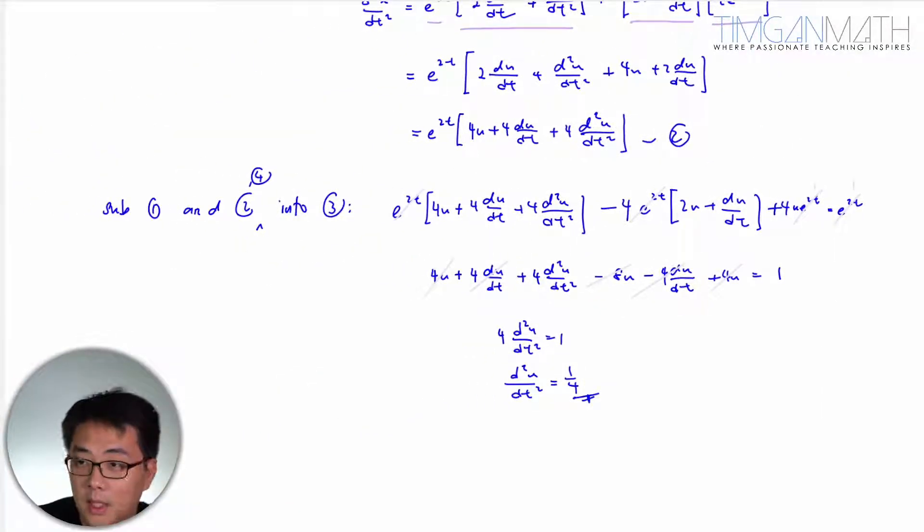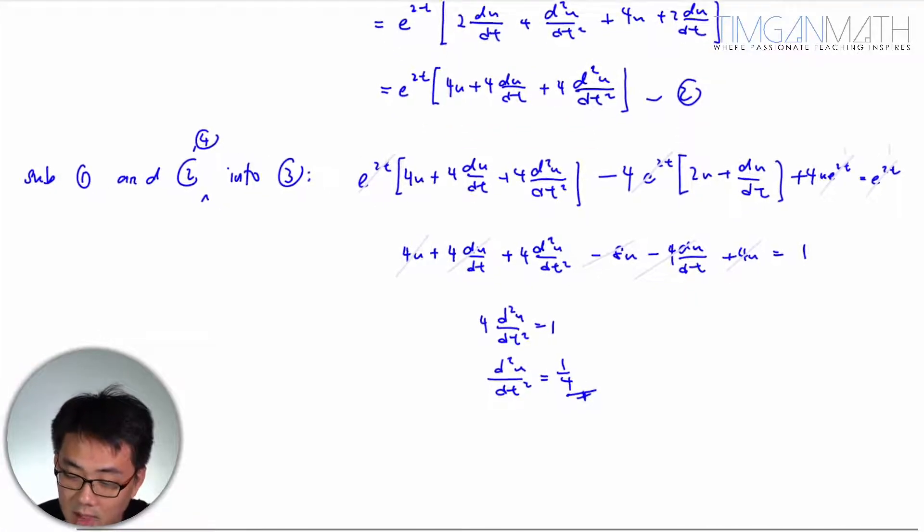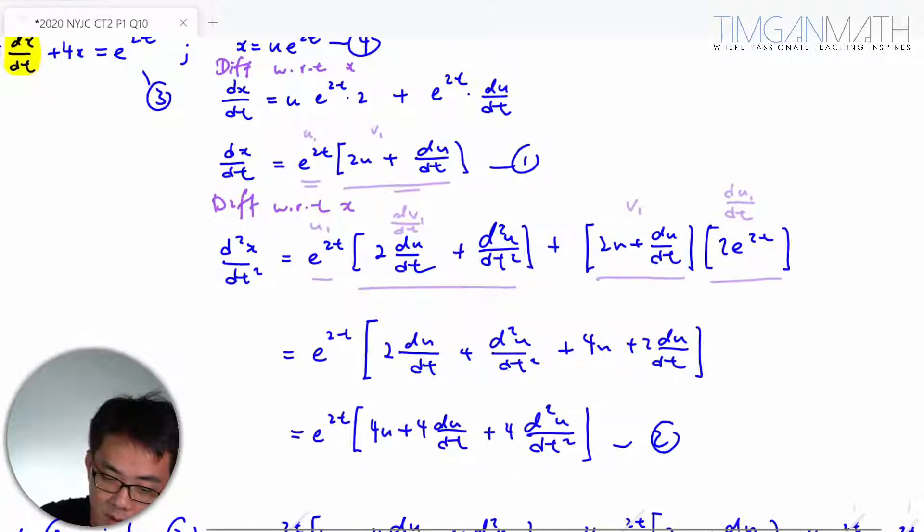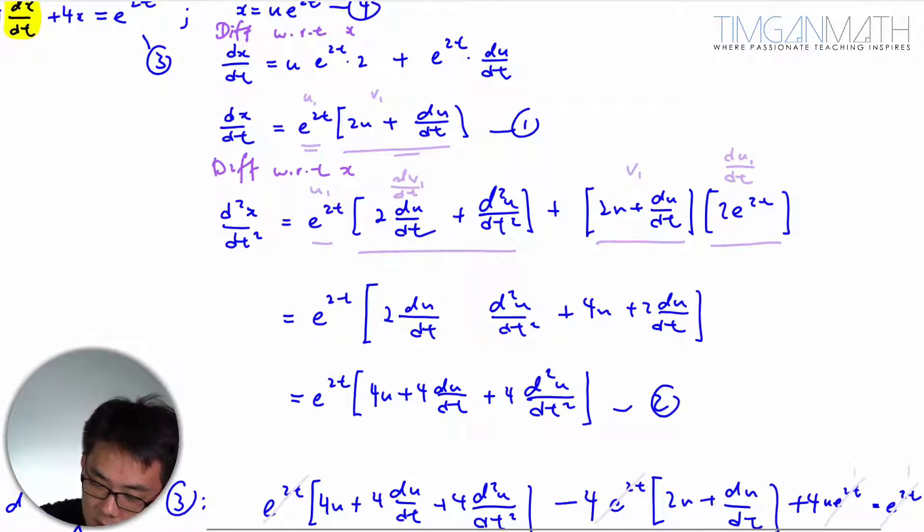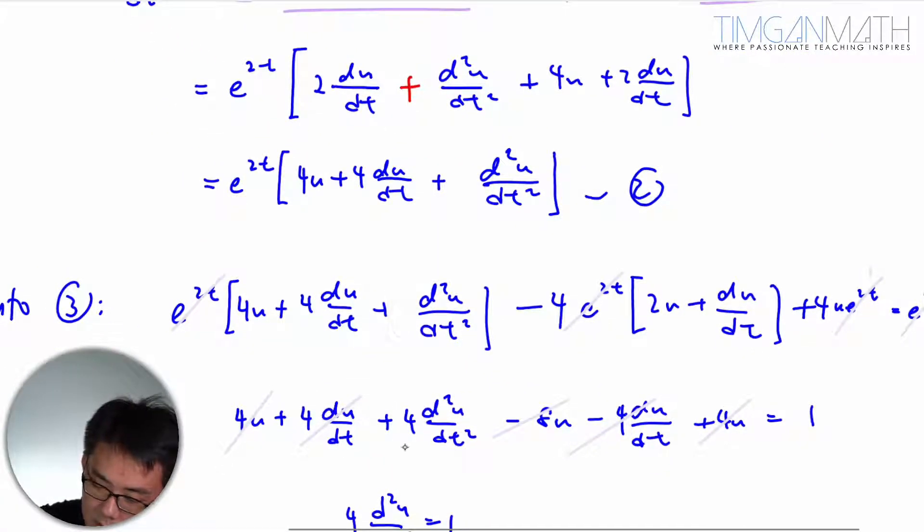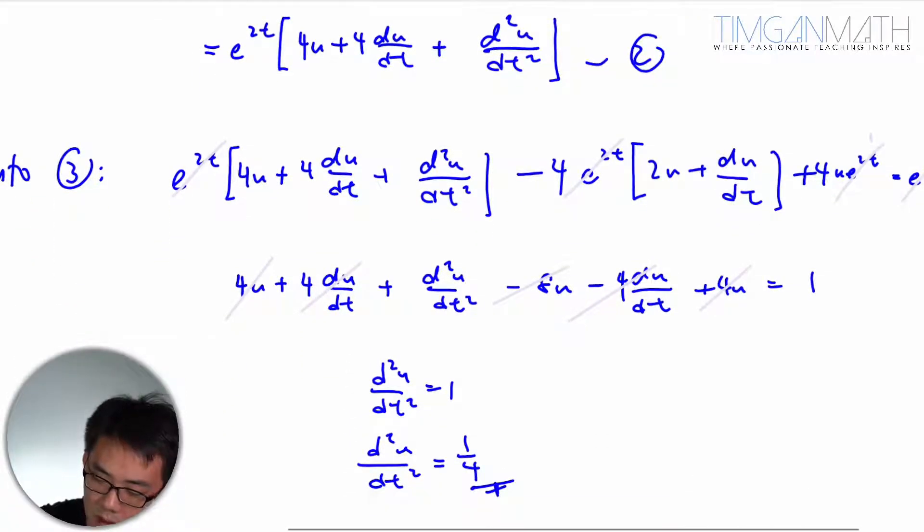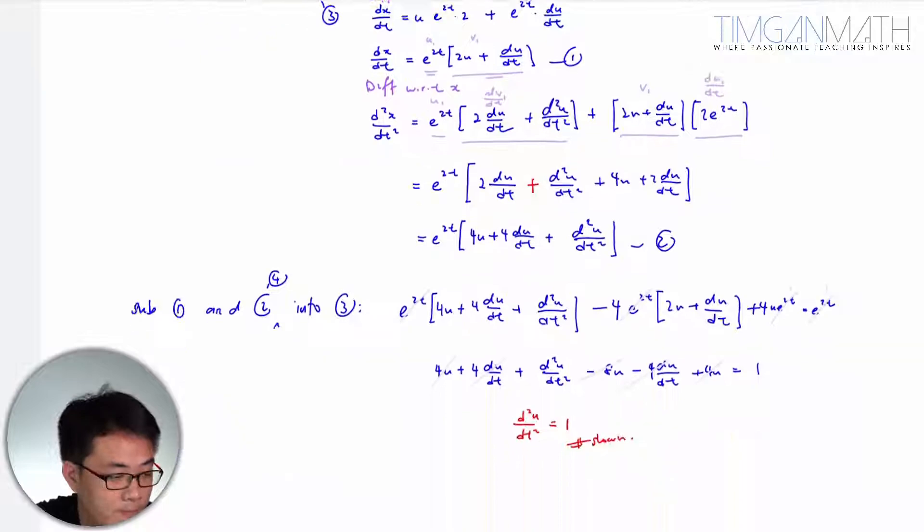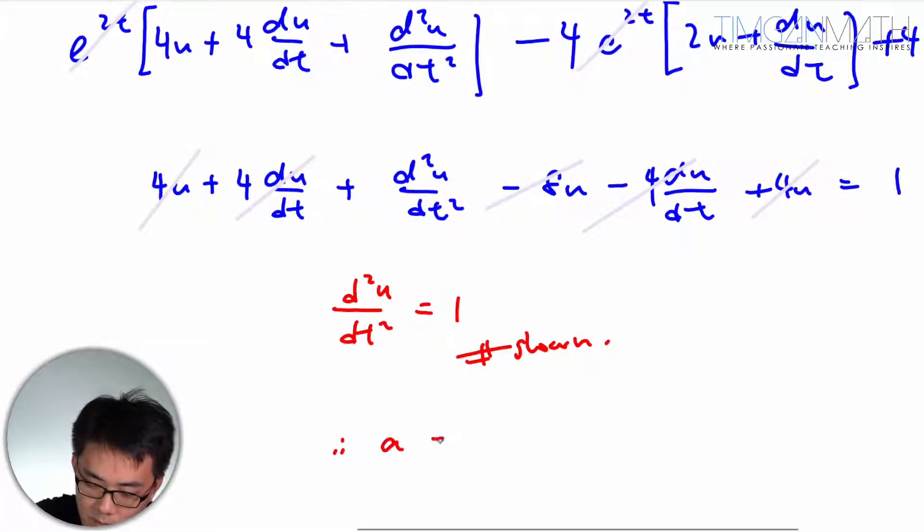Since a is the constant to be determined and d²u/dt² equals 1/4, we have a = 1/4. Let me check for any mistakes... I notice a careless sign error here where the plus became a 4, but correcting that, a equals 1/4.